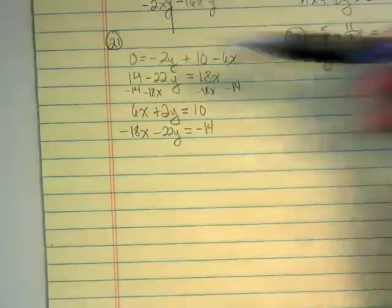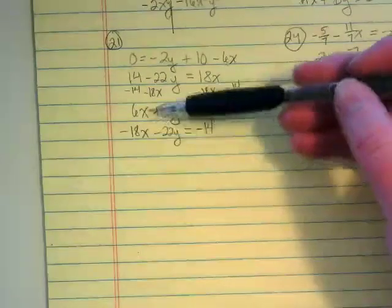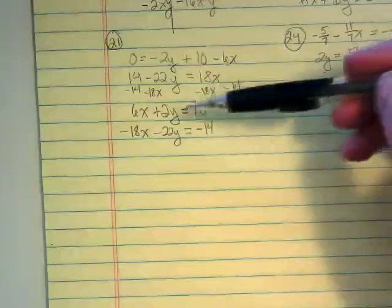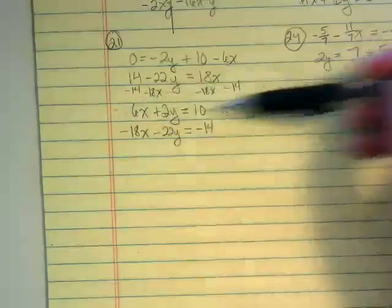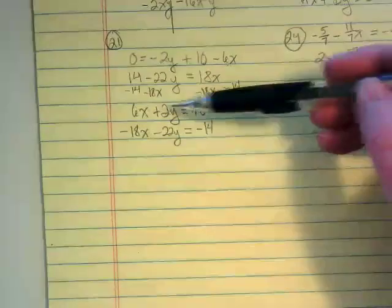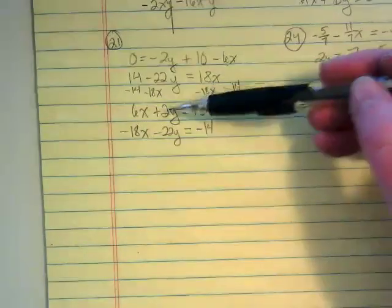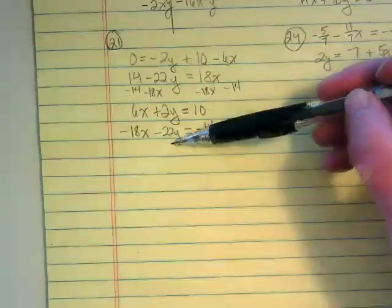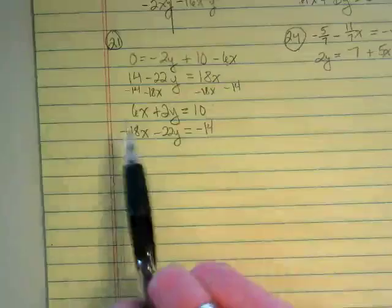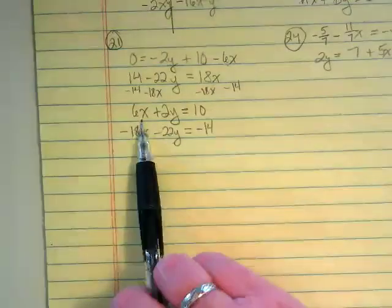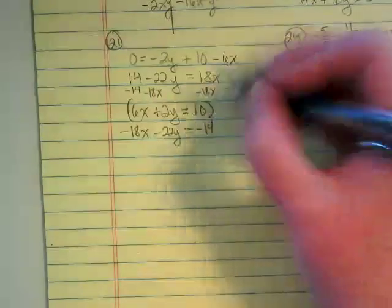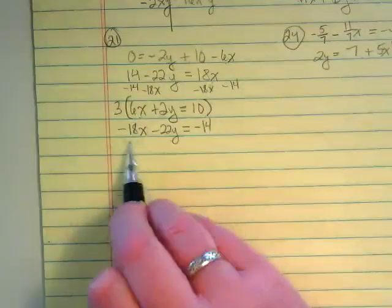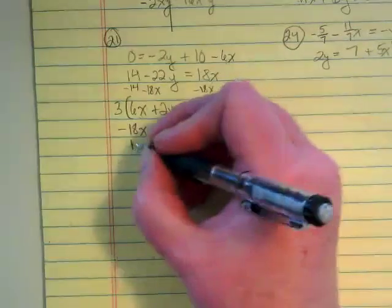Now for elimination, the next step is that we need to have two terms ready to cancel out. So I could multiply this top equation by 11 because 11 times 2 would get me 22. Then I'd have positive 22y and negative 22y. But I think I'm going to go with 3 instead. Why? Because that 3 times the 6 is going to get me a positive 18x. And then I can get rid of that term.